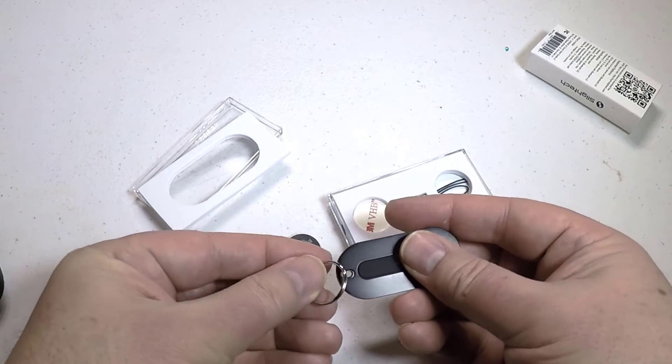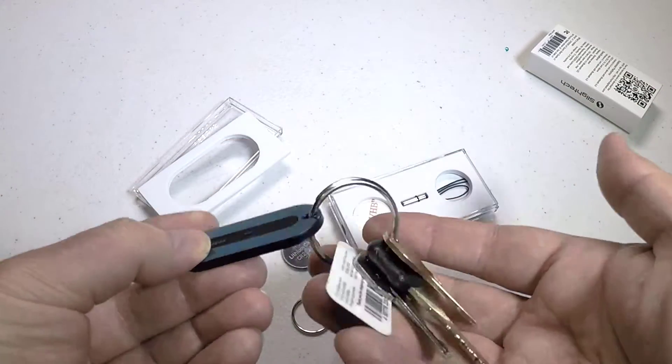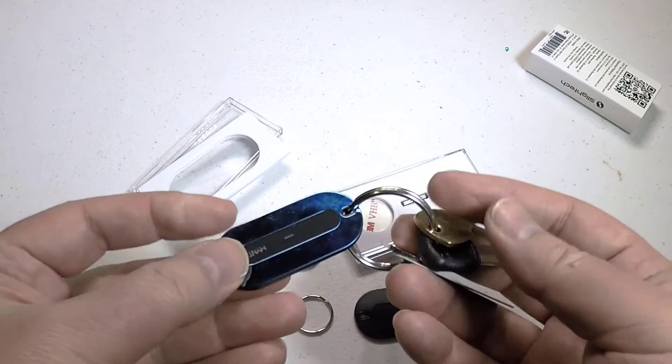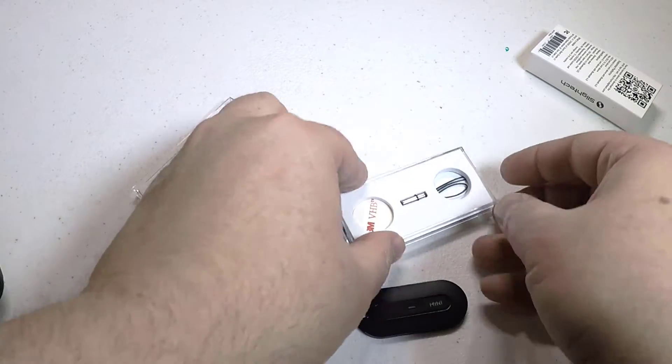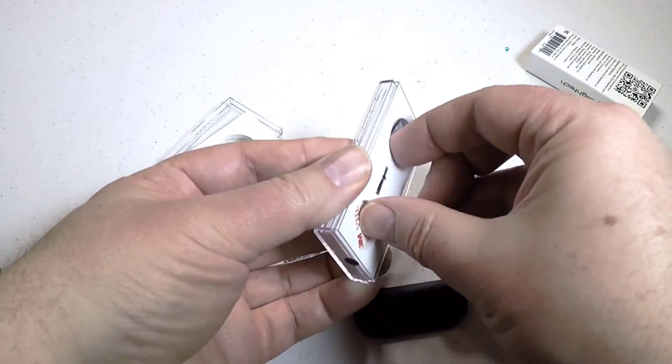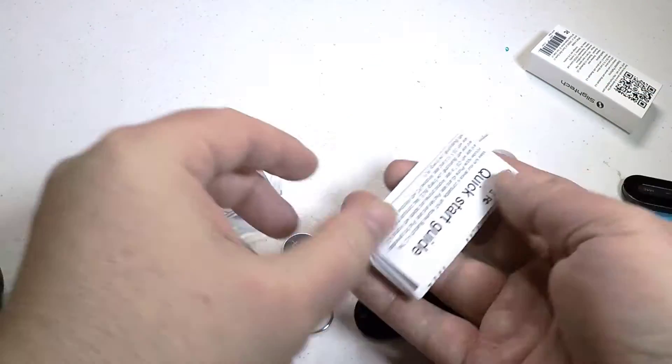One thing I have is if I go to the store and have my phone in the cart, I'll sometimes forget it. So what's nice is I put this on my keychain and I know when I've left my phone behind, so that's very cool.